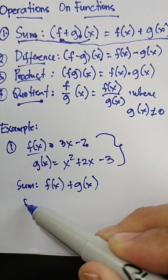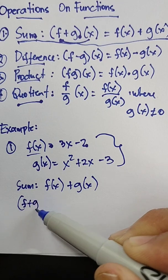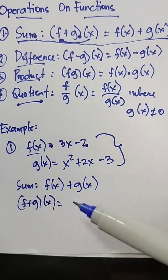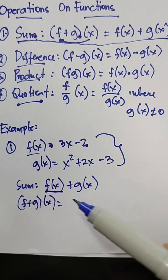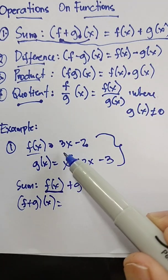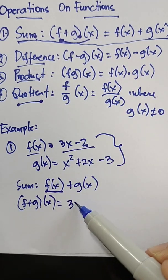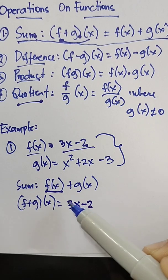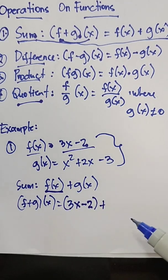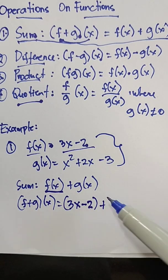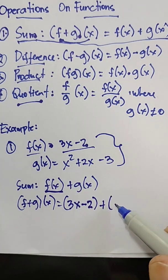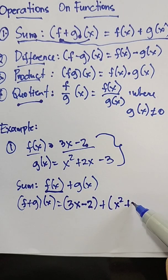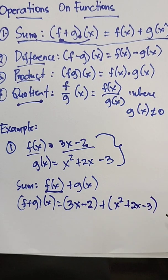Let's substitute the value of f of x. We have f plus g times x equals, what is the value of f of x? That is 3x minus 2 plus, the value of g of x is x squared plus 2x minus 3.